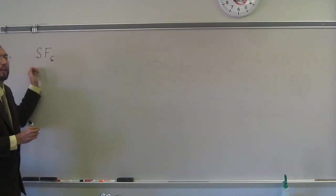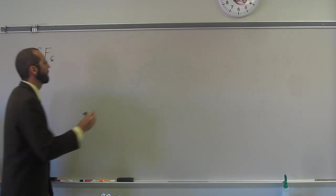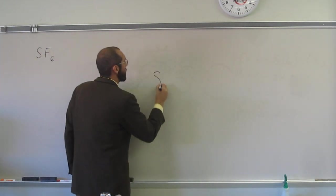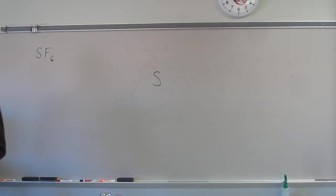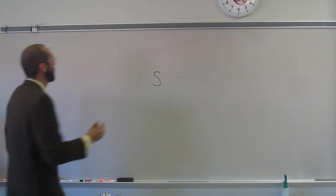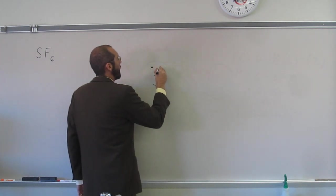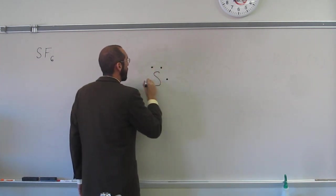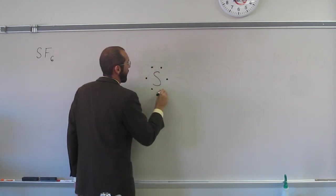Hopefully you see that sulfur is the central atom, and the thing that we're going to do is just draw its normal valence electrons. So one, two, three, four, five, six. Notice I drew them a little further apart than what I normally do.